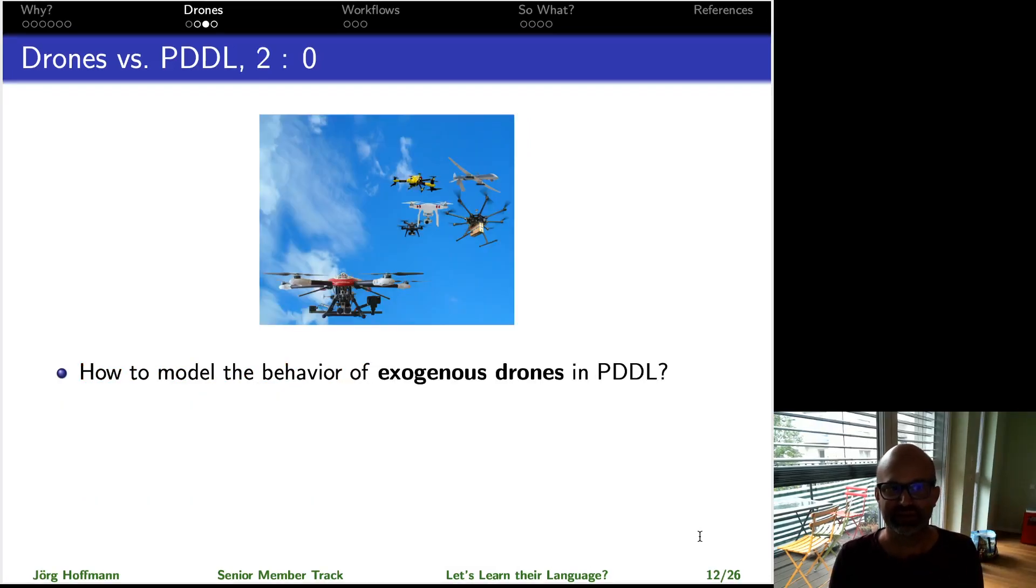Second, even worse, I want there to be exogenous drones controlled by third parties, not by myself. Okay, so moving obstacles. How on earth could I model this in PDDL?